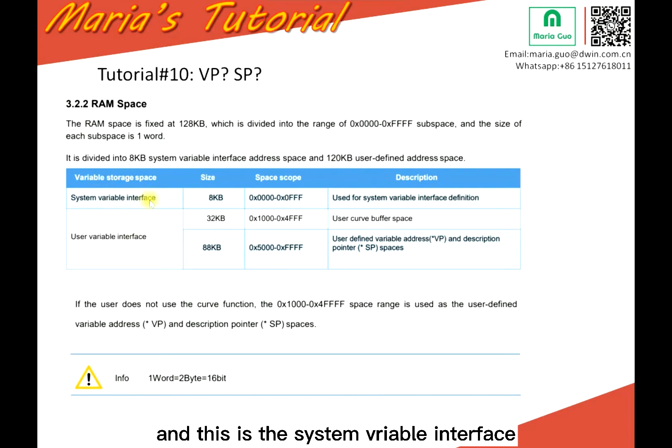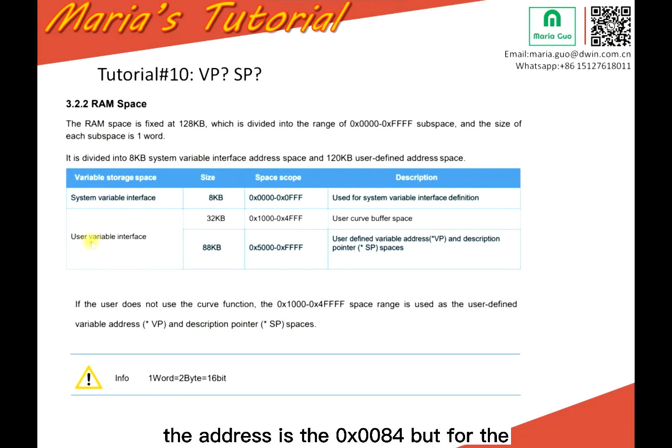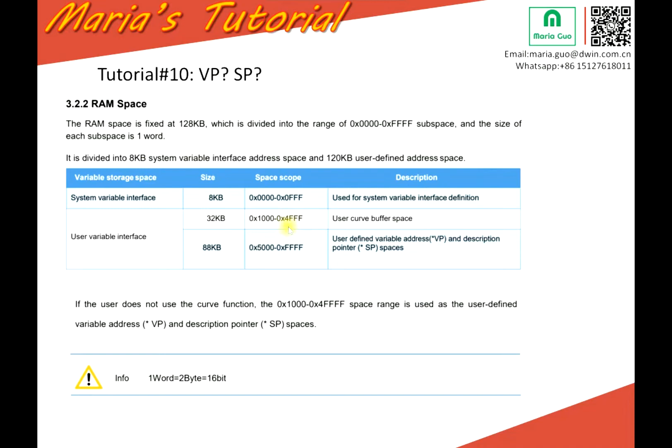For example, for changing the page, the address is 84. But for data — digital number showing — the address is from 1000. And SP and VP share the common space.